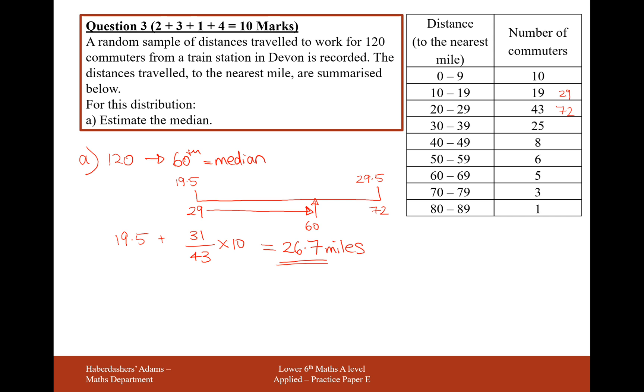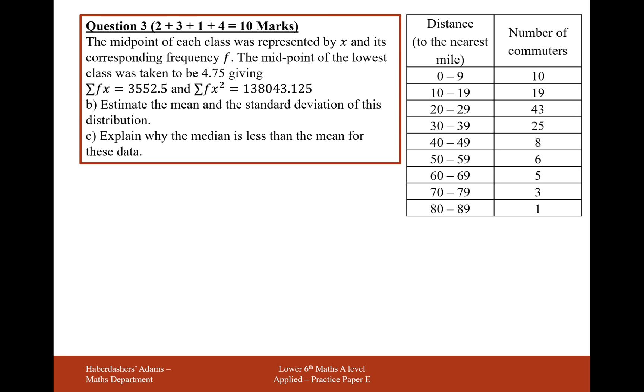Okay, so the next question here is part B. The midpoint of each class is represented by x and its corresponding frequency f. The midpoint of the lowest class is taken as 4.75. We have some sum of fx's here and some sum of fx squareds here. Estimate the mean and the standard deviation for this distribution.